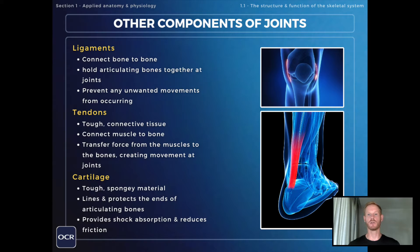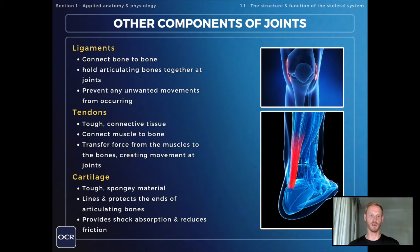Tendons are also tough pieces of connective tissue, but instead of connecting bones together, tendons connect muscles to bones. Their main role is in producing movement — they transfer force from the muscles as they contract to the bones, therefore creating movement at joints.